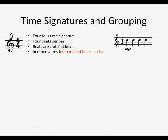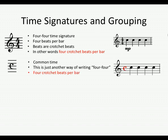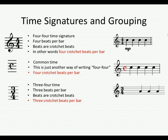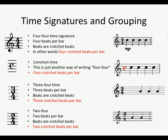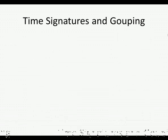In Grade 1 we will only be working with denominators of four, therefore crotchet beats. 4/4 time signature means four beats per bar and the beats are crotchet beats — four crotchet beats in every bar, as you can see in the example on the right. Common time is just another way of writing 4/4, so again meaning four crotchet beats per bar. 3/4 time means three crotchet beats per bar, and 2/4 time means two crotchet beats per bar.